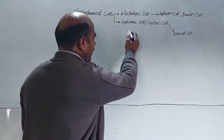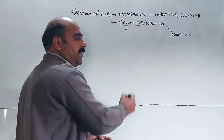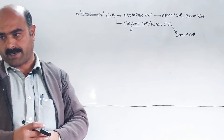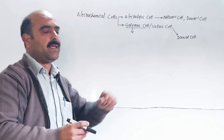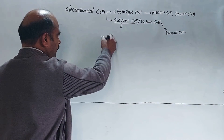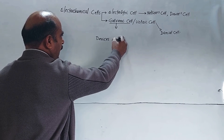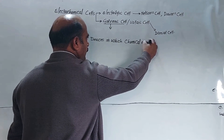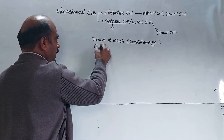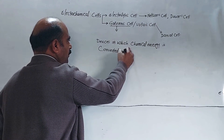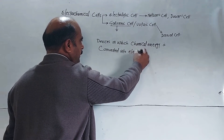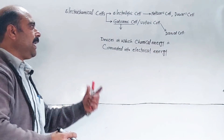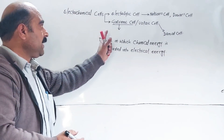Galvanic cells are devices in which a spontaneous redox reaction produces electric current. That is, chemical energy is converted into electrical energy. This is called a galvanic cell.